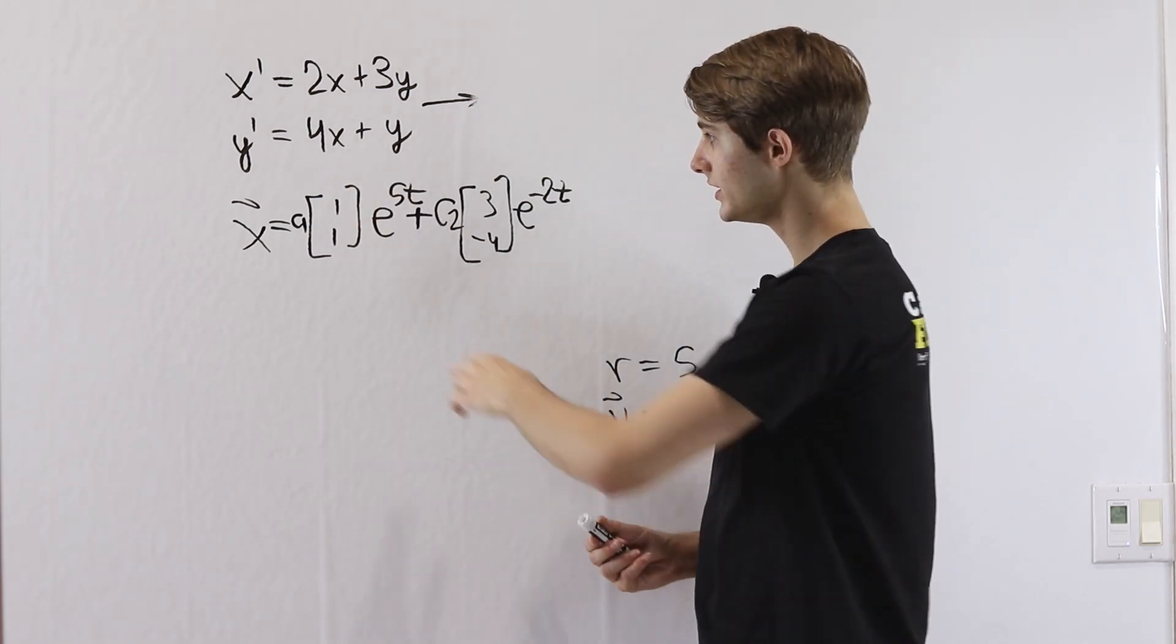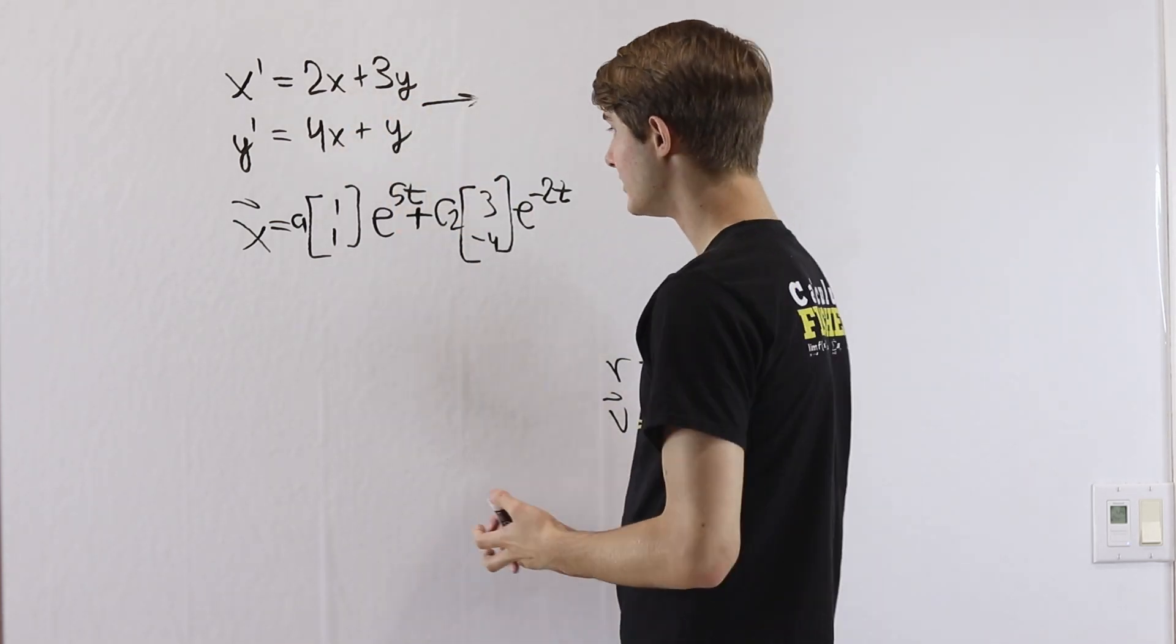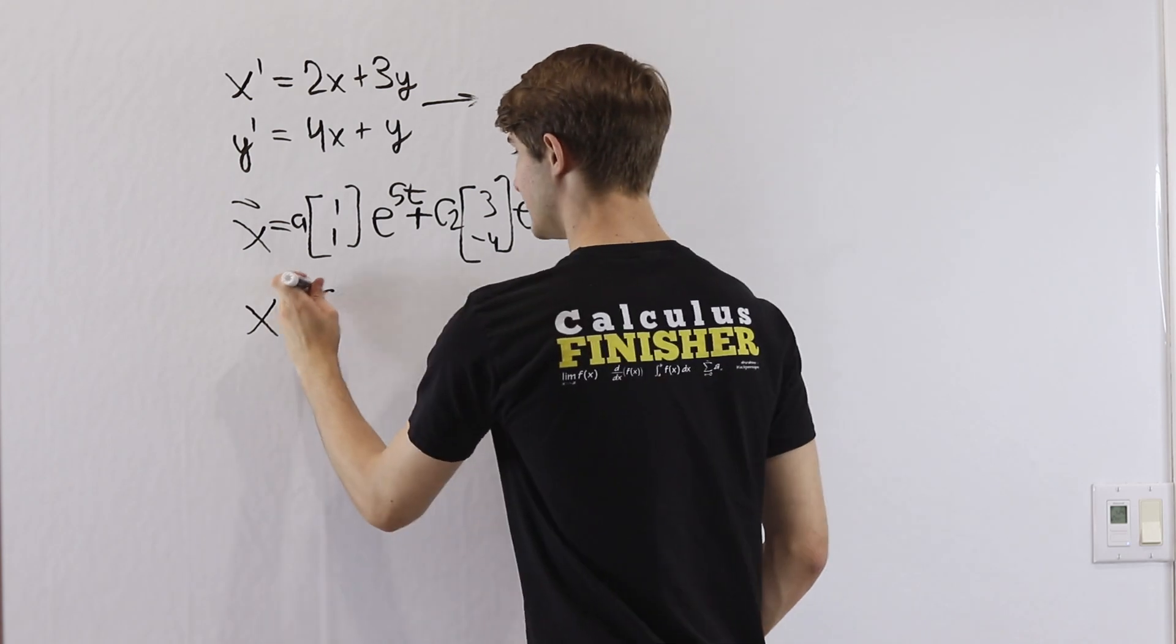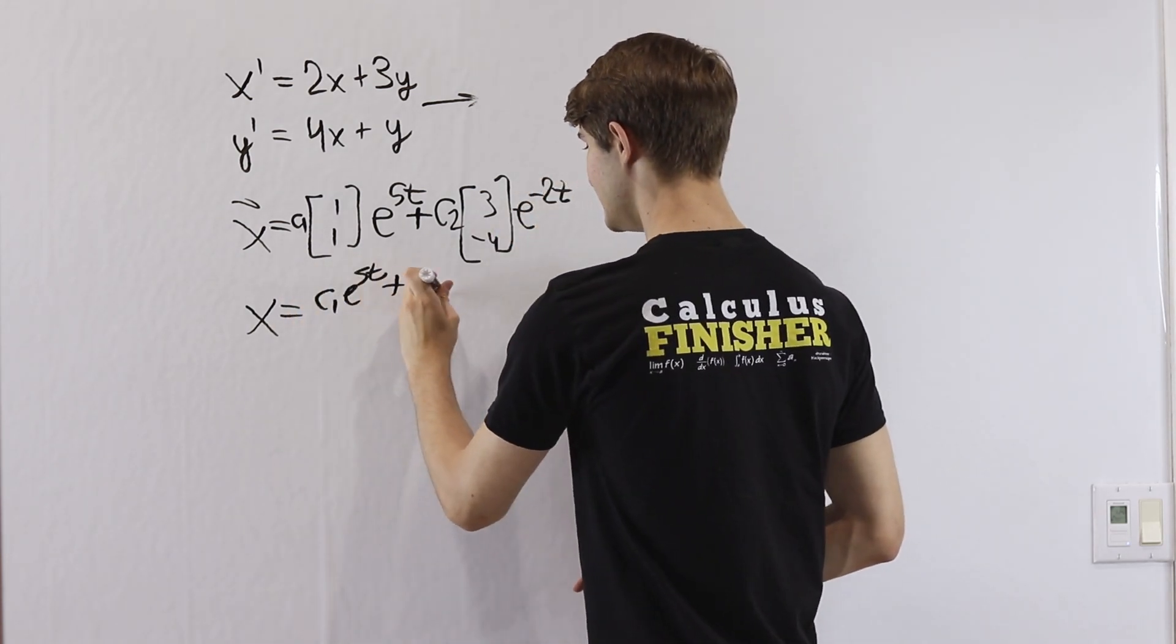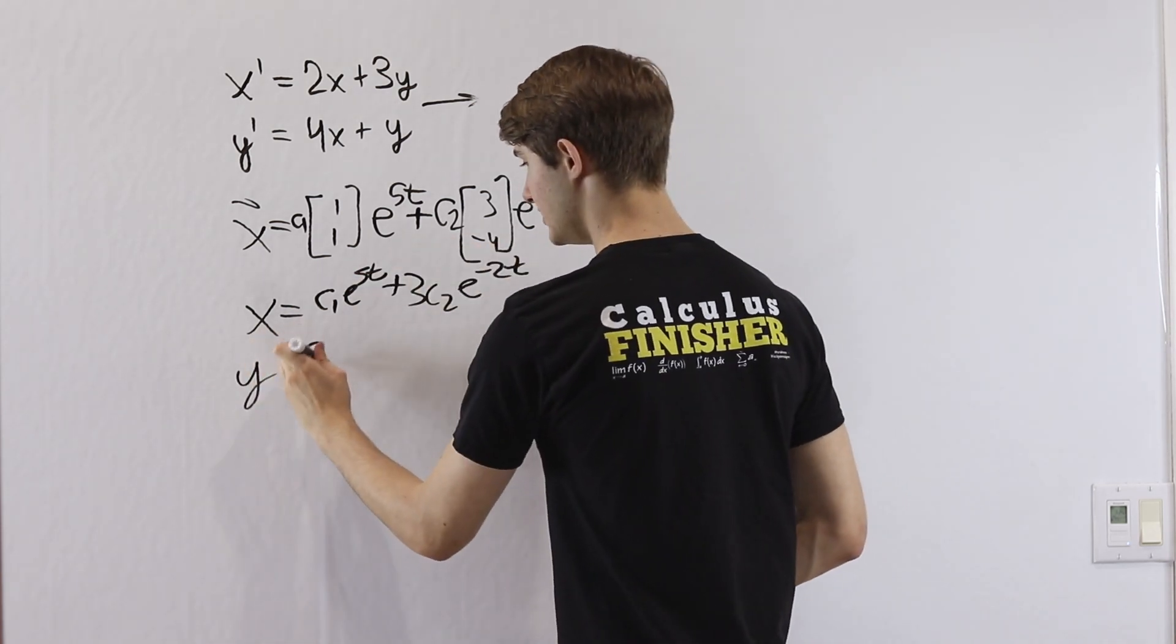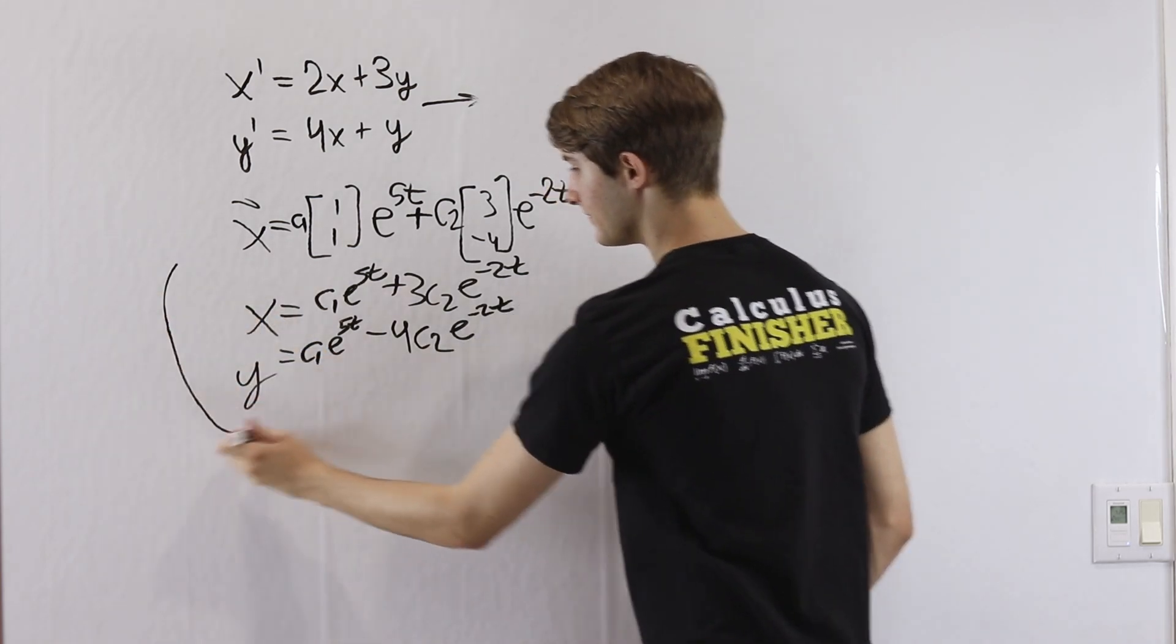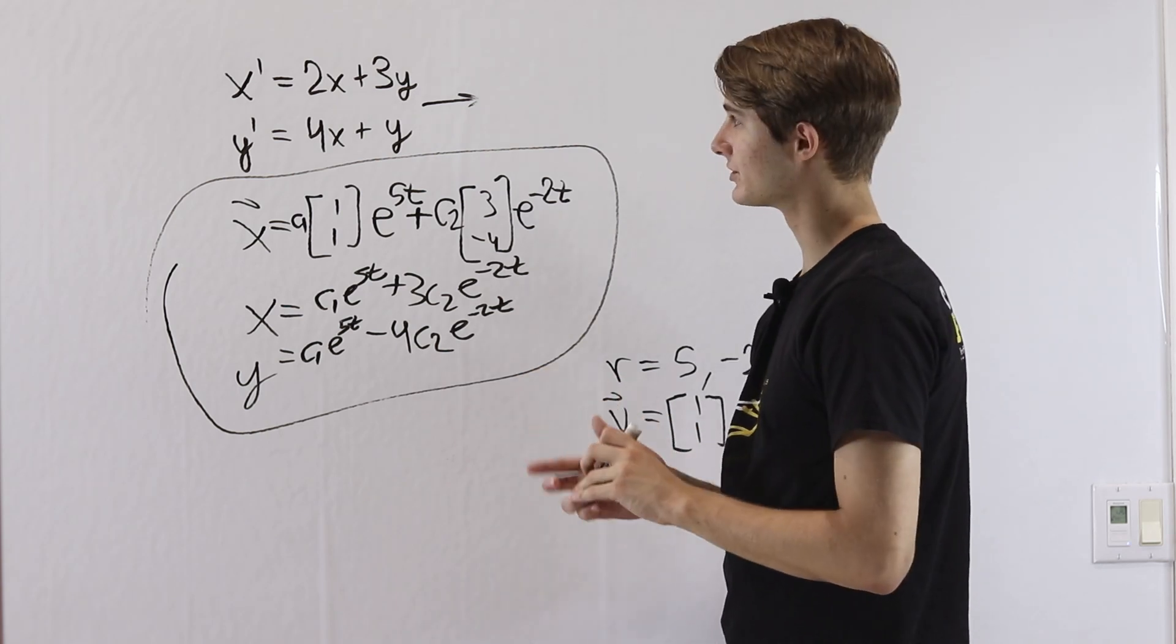Now all we need to do is turn this into some functions for x and y, because that's what we're really trying to get at. All that means is we split up these vectors into the x and the y components. So the x component is going to just be this top row. So we'll have c1e to the 5t, and then this 3 becomes 3c2e to the negative 2t, and y is going to be the bottom row. So we have c1e to the 5t, and then minus 4c2e to the negative 2t. So this is the vector form of our solution and the variable form of our solution.